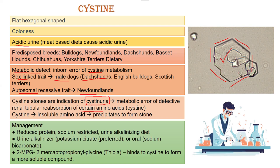So cysteine appears in the urine, where it is basically an insoluble amino acid, and it starts to precipitate to form crystals and later on cysteine stones. This is a metabolic error of cysteine metabolism.